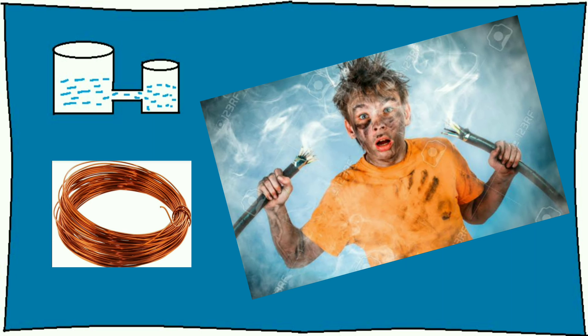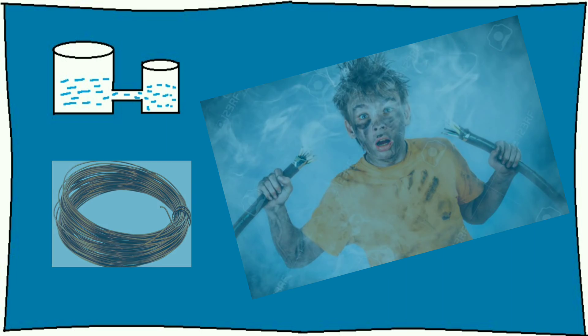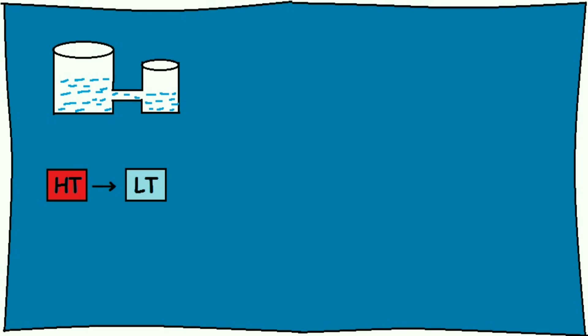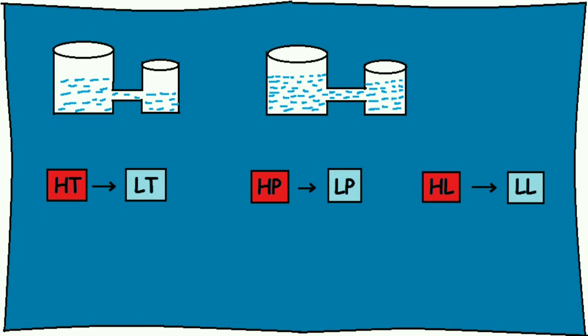There can be various analogies. For example, of heat, heat flows from high temperature to low temperature. In gravity, the objects move from high potential to low potential. Water moves from higher level to a lower level. Net flow will stop after the levels, pressure or temperatures are same.